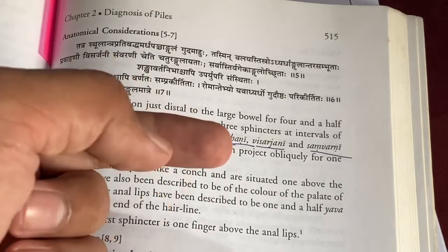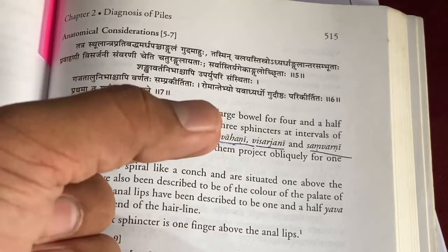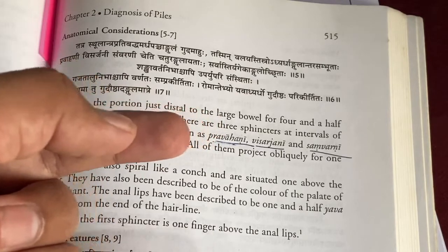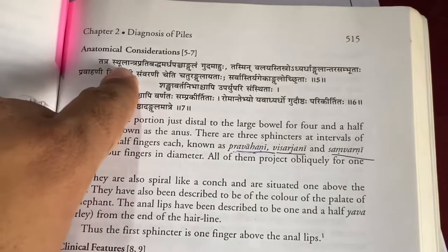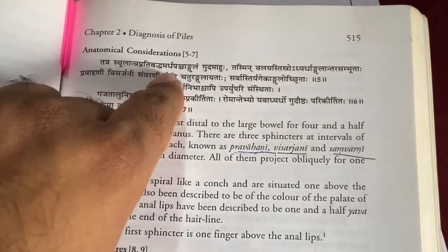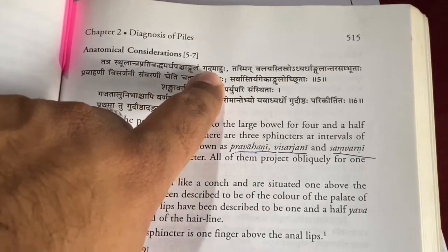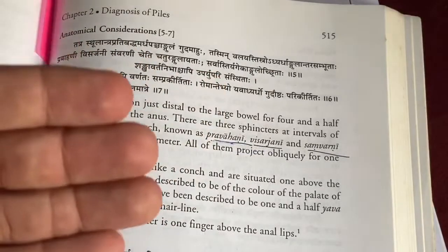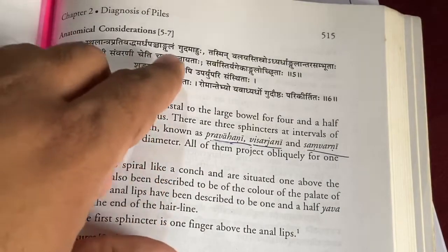Angula—we can say the breadth of one finger, that is the measurement they used to tell in the olden days. This much is called as one angula. The breadth of the finger is called one angula, or else we can take the distal part of the phalanx, that is one angula. So approximately we can take it as one inch.